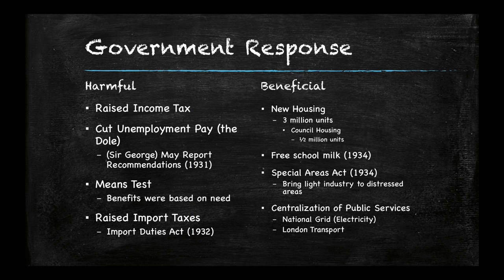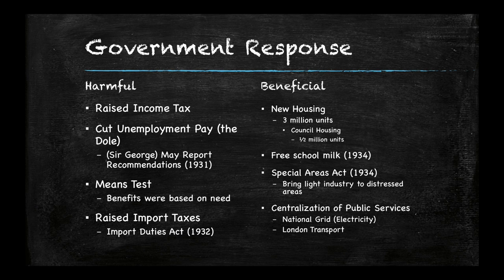The government response to their depression was a mixed bag. First, there were some harmful things: they raised the income tax, which many people couldn't afford to pay at all. They also cut employment pay — the so-called dole — and you see the results of that in the film Love on the Dole when they stop paying people. The May Report had recommended this. There was also the development of a means test: if you were able to have some income, you weren't eligible for the dole anymore. This means test, a very hated test which based your benefits on your need, was reviled by many people.